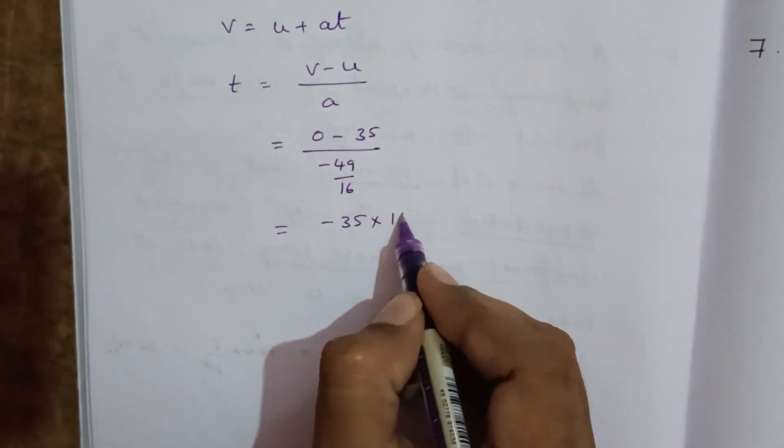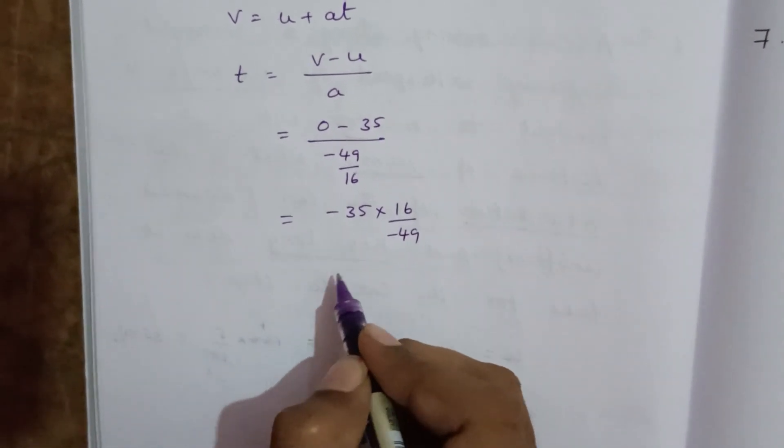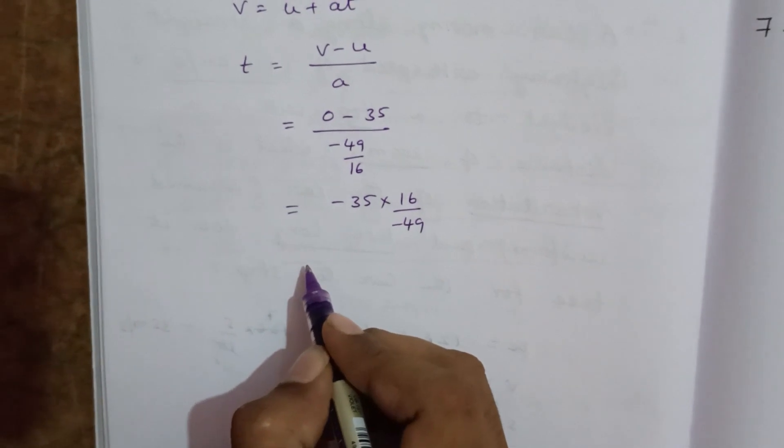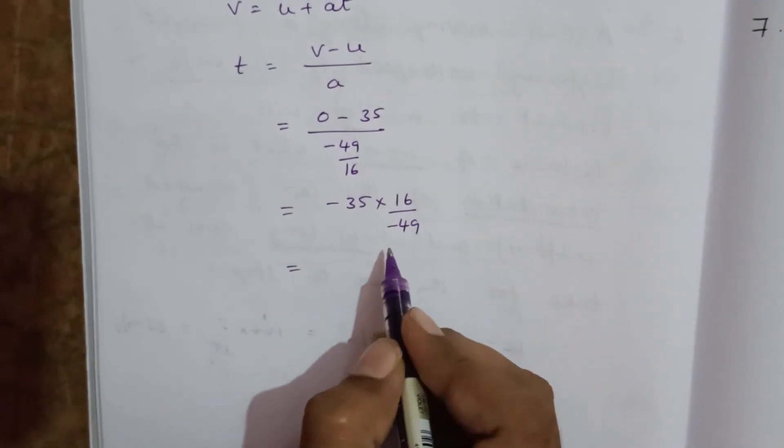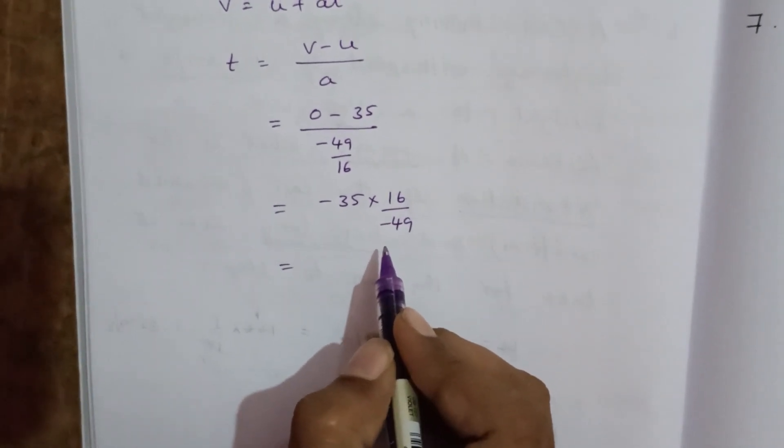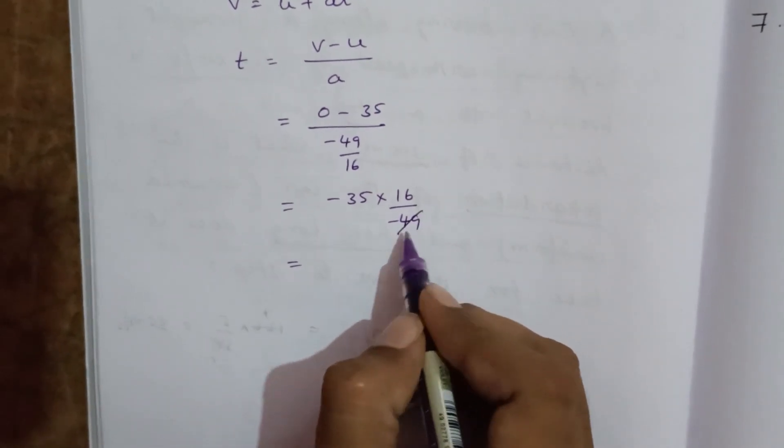Then it becomes minus 35 divided by minus 49 by 16. Taking reciprocal, 16 by minus 49. Minus into minus becomes plus, 35 into 16 by 49. And here we can cancel 7 table.